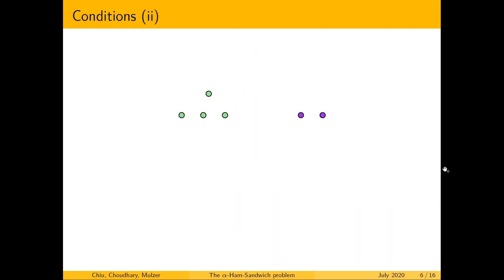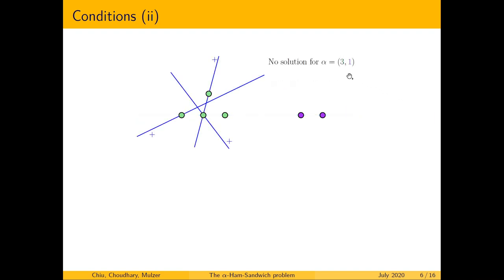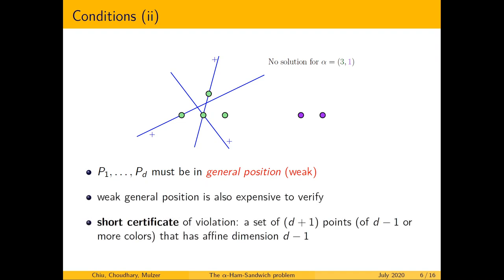There is one more condition. Here we have four green and two violet points, and this line is defined using either of these green points and either of these violet points — so there are six colorful sets defining this line. This gives a solution for one alpha vector, but if we want exactly one violet point, no solution exists. This suggests we need weak general position for the point set. Weak general position is also hard to verify, but there is a short certificate of violation: a set of d plus 1 points with affine dimension d minus 1 or lower, where these points have d minus 1 or more colors.